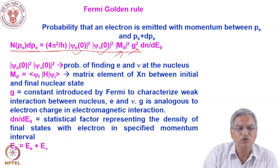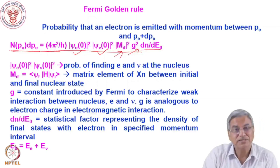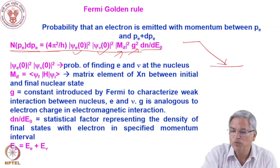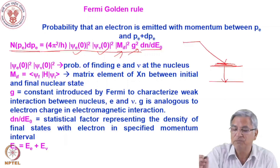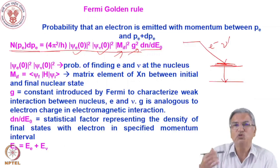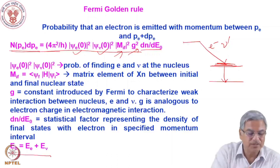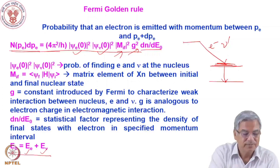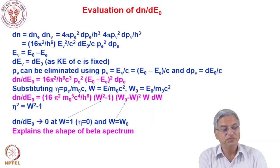The density of states statistical factor: when a nucleus decays by beta, it populates some states. The density of states dn/dE for the combined electron-neutrino system is given by dn/dE₀, where E₀ is the total kinetic energy shared between electron and neutrino: E₀ = E_e + E_ν. So E₀ is shared in an infinite number of ways between the electron and neutrino, which leads to the continuous spectrum.